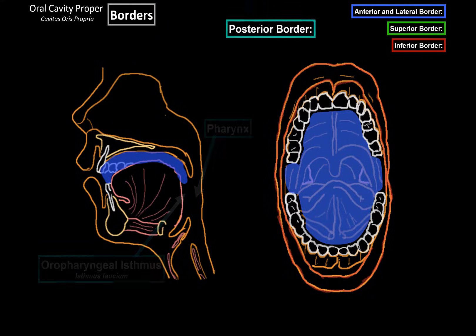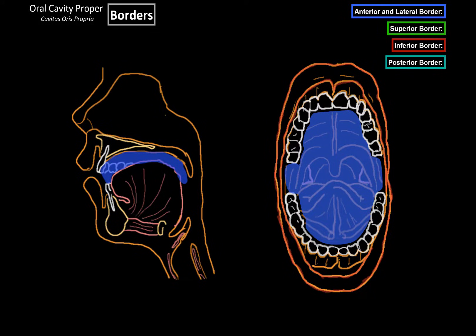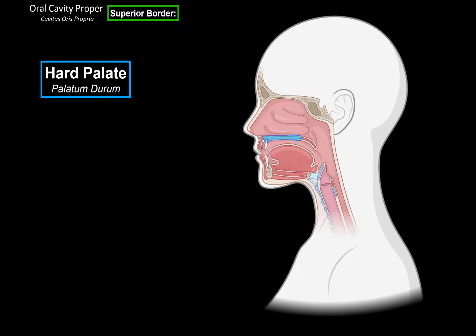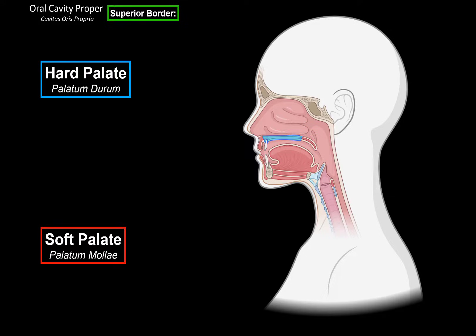Our goal in this video is to go through all the structures associated with these borders. We already looked at the anterior and lateral border in our last video, but now let's start with the superior border, which consists of the palate. The palate is a horizontal partition separating the oral cavity from the nasal cavity. The ventral part is formed by the bony hard palate — it's hard because it primarily contains bone. The dorsal part is called the soft palate, and it's formed primarily by tendons. The soft palate is used primarily during swallowing, but now let's go through the hard palate first.